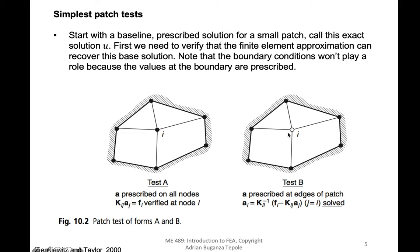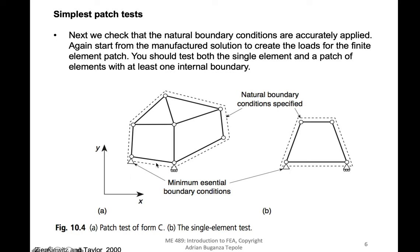This type of patch test has no natural boundary conditions — you apply all the essential boundary conditions and you want to check whether or not the inner nodes satisfy the correct equilibrium. But you also want to check the natural boundary conditions, so that's a different type of patch test. Again a very simple mesh, but now you don't fix all the exterior nodes — you only fix a few, applying the minimum essential boundary conditions. Now you apply tractions, solve for the displacements of the nodes, and check whether you get the correct displacement from your manufactured solution.